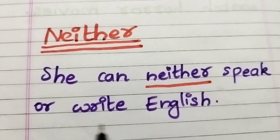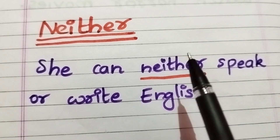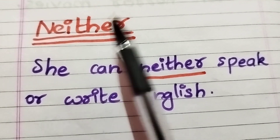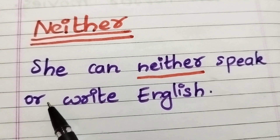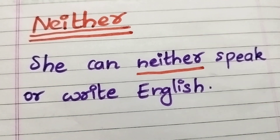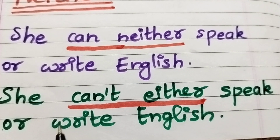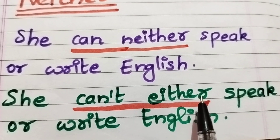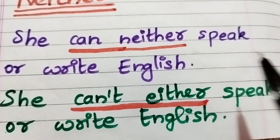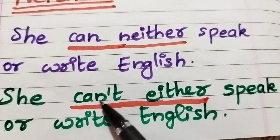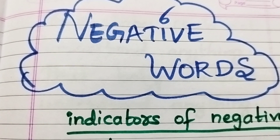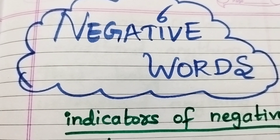Here is another negative sentence with the negative word 'neither': 'She can neither speak nor write English.' This is a negative sentence. You could also write it as 'She can't either speak or write English,' making 'can' negative.